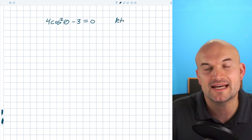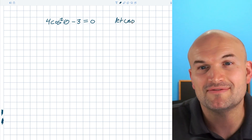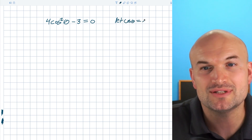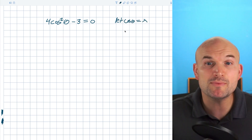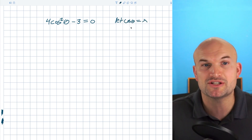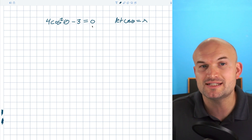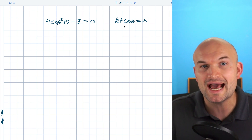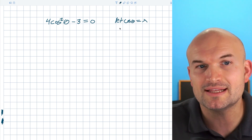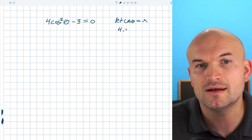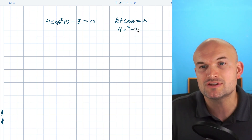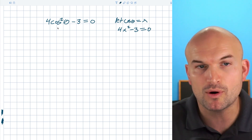What I mean by substitution is to let our trigonometric function represent a variable. So in this example, I can say let cosine of theta equal x. Now we're much more familiar with solving equations with an x. So if I replace the cosine of theta with x, I can rewrite this as 4x squared minus 3 equals zero.